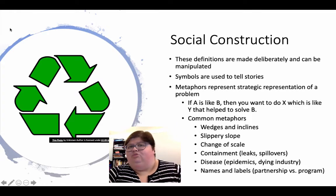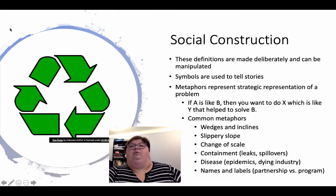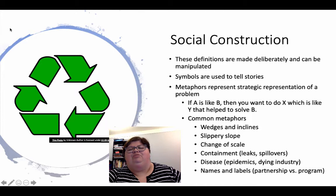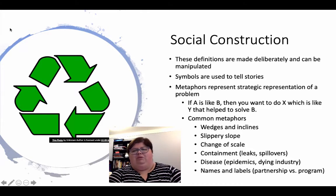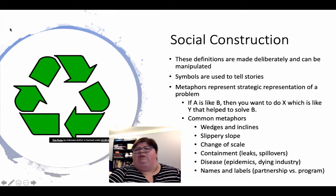Between symbols and metaphors we can describe a lot of the world around us. Metaphors are ways we can describe a problem by likening it to another problem. We can describe the opioid crisis as an epidemic, and say this is how you have to treat an epidemic — if A is like B, then you want to do X, which is like Y, to solve B. Common metaphors include wedges, inclines, slippery slopes, change of scale, containment of the problem itself. The disease metaphor applies to the opioid crisis being labeled as an epidemic even though it's not a contagious disease, or industries being labeled as dying industries. Names and labels of how we specify programs, partnerships, or collaborations matter as well.